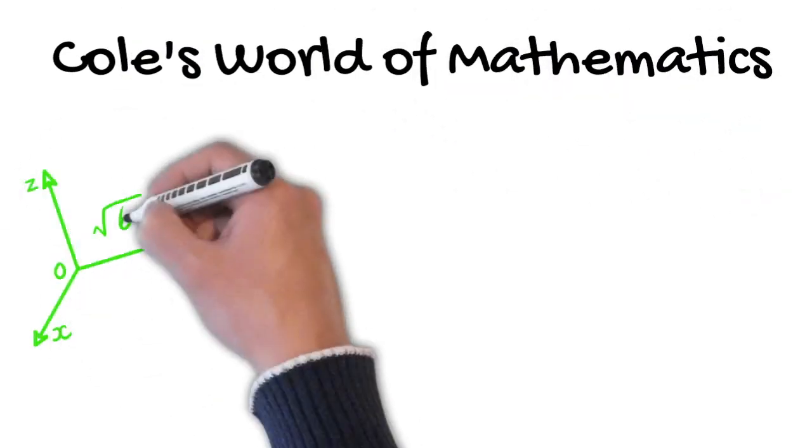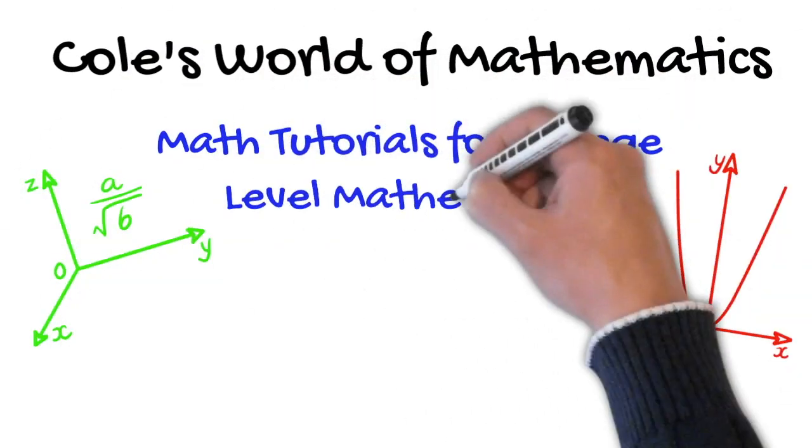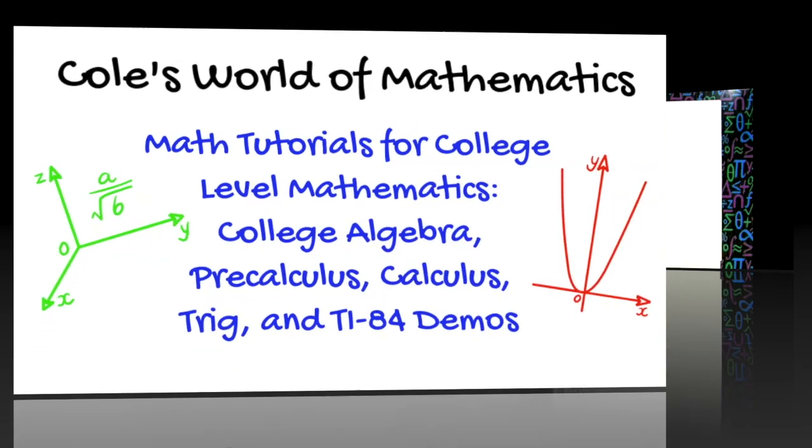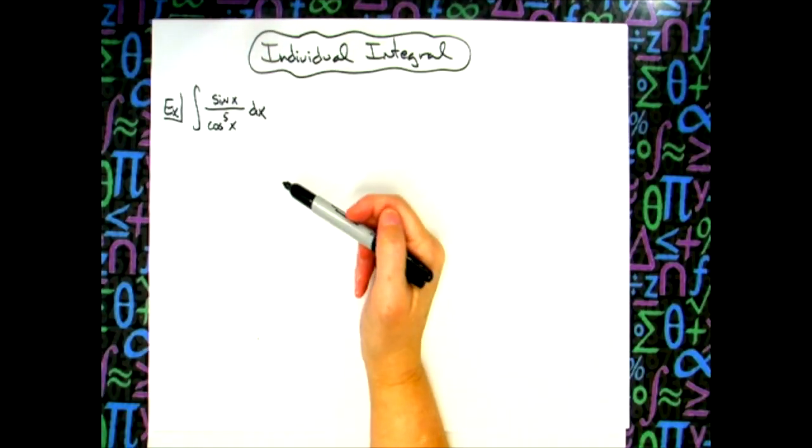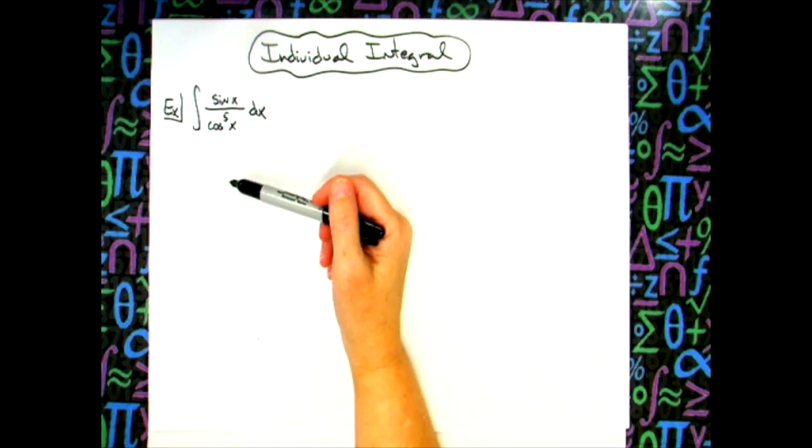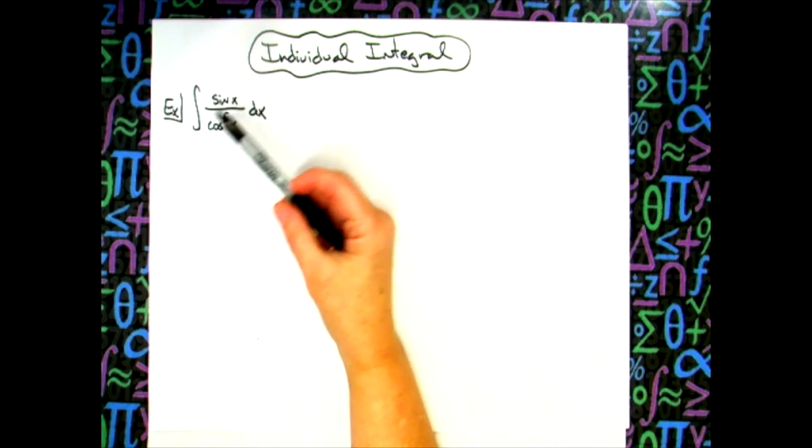In this video we're going to take a look at an individual integral. It's going to be a straightforward u-substitution trig integral which would typically be found in a calc one class. So we're going to integrate the sine of x over cosine x to the fifth power.